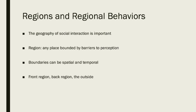Goffman argues that the boundary between front region and back region can be both spatial and temporal. A spatial boundary means that the front stage and the backstage are located in separate places. For example, the front stage for a teacher is the classroom, whereas the backstage can be the staff common room, somewhere in the teacher's private home, or maybe the toilets of the school. This boundary can also be temporal, meaning it changes across time. For example, the classroom might be front stage when it's filled with students, but it becomes a backstage when the students leave the room.